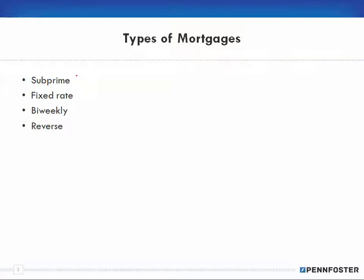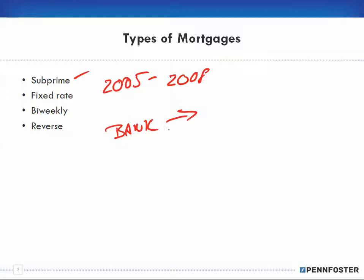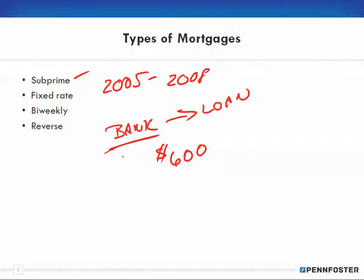As you read the chapter, you'll read about the subprime. Basically, between the years of about 2005 and 2008, anybody who could breathe, the bank gave them a loan on a home. People were living well beyond their means. Let's say someone could afford a $600 mortgage payment — the banks didn't really require much qualification because of the way they repackaged those loans, which is why they were called subprime.